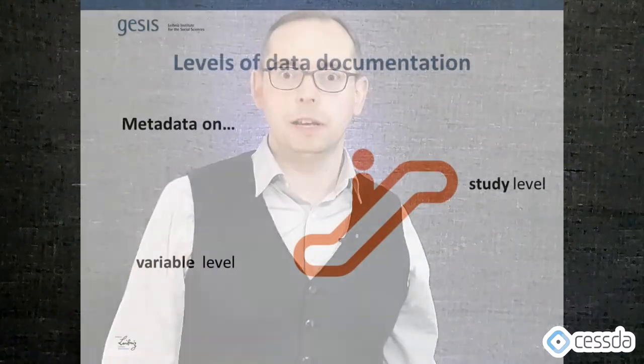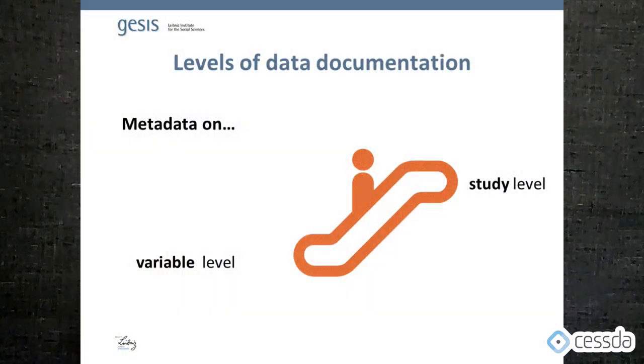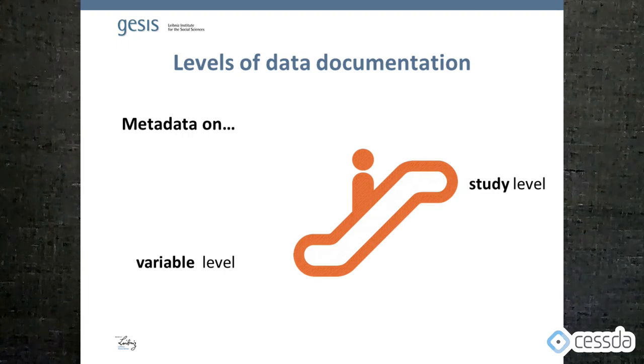We distinguish two levels of metadata. The first level is metadata at the study level — it entails information which describes the whole project or survey project you conducted. The second level is the variable level, which entails information more specific to the variables and questions you ask in your project.